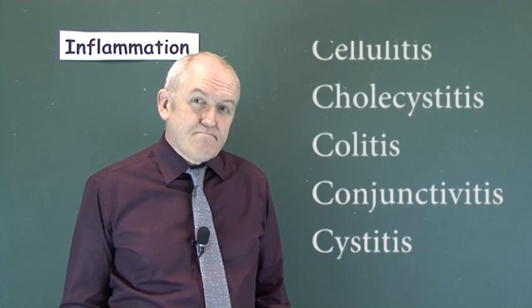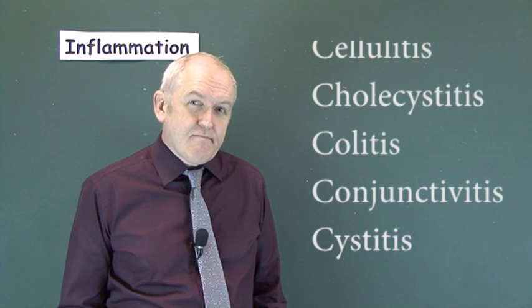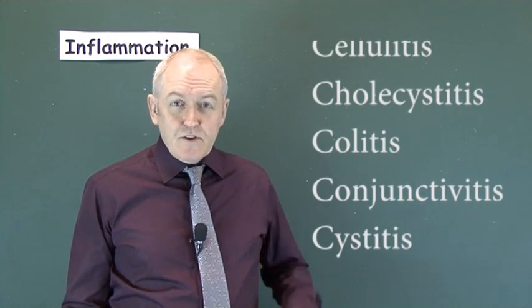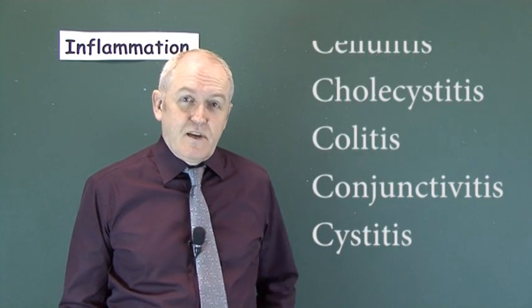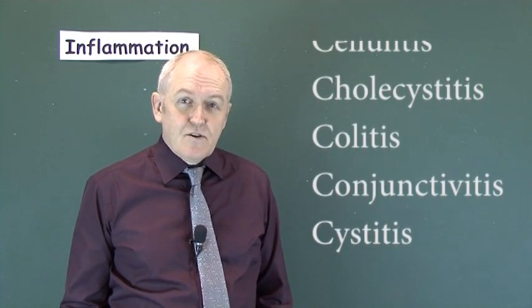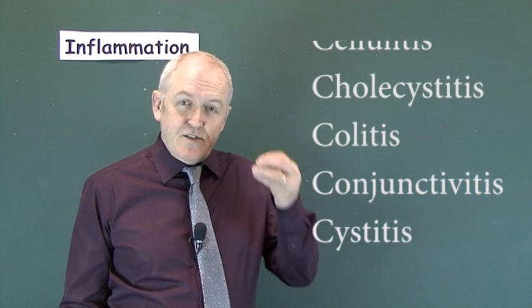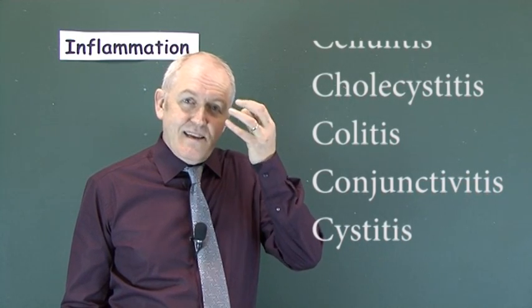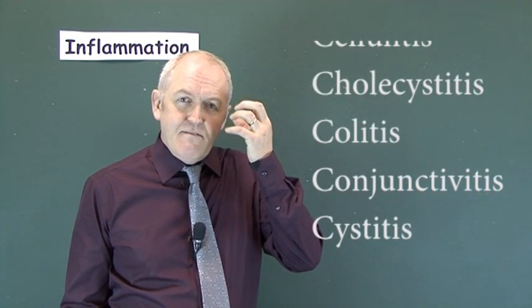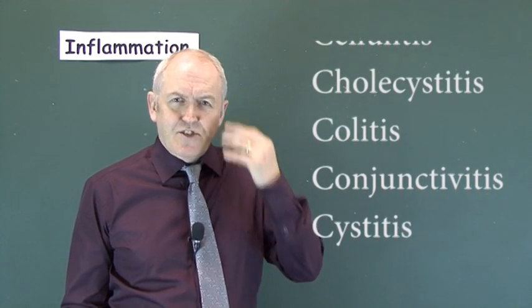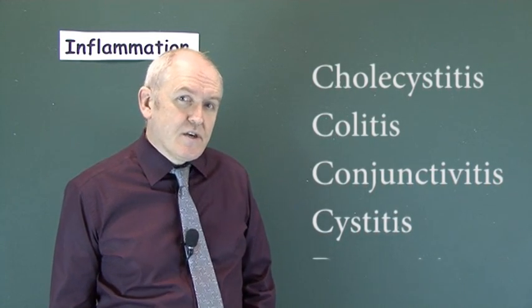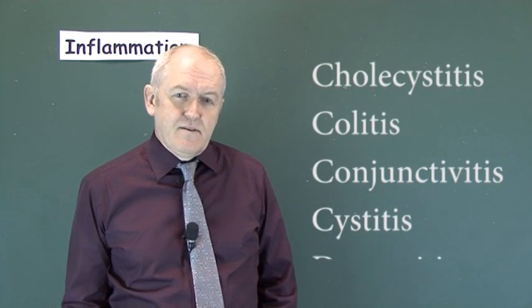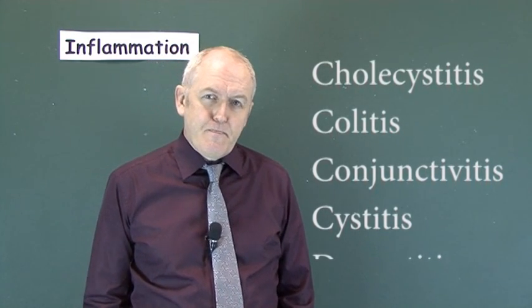Conjunctivitis — the conjunctiva is the layer in front of the eye. With conjunctivitis you get a red eye, very scratchy, very painful, an unpleasant condition. It's usually caused by bacterial infection.